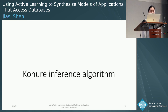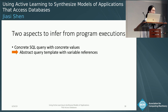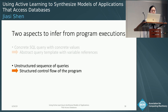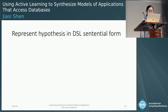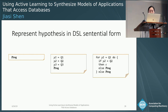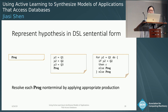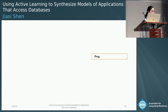Let's look at the inference algorithm. Conceptually, there are two things we need to infer. From the concrete SQL queries, we need to infer the abstract query templates with variable references. From the unstructured sequence of queries in the trace, we need to infer the underlying control flow of the program. In the algorithm, we maintain a hypothesis of what we currently know about the program, represented as a sentential form in the DSL. Here, PROG is a non-terminal symbol in the DSL. The algorithm is going to resolve each PROG non-terminal by applying the appropriate production. For a concrete example, let's infer the student registration program. The initial hypothesis is PROG, which means we currently don't know anything about the program except that it belongs to our DSL.